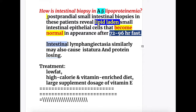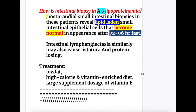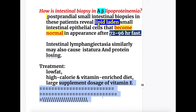Intestinal lymphangiectasia may similarly also cause steatorrhea and protein losing enteropathy. Treatment of A-beta lipoproteinemia consists of a low fat diet, high calorie and vitamin enriched diet, and large supplemental doses of vitamin E.